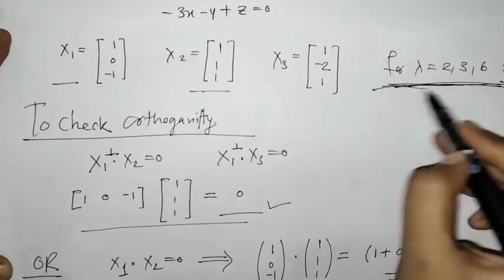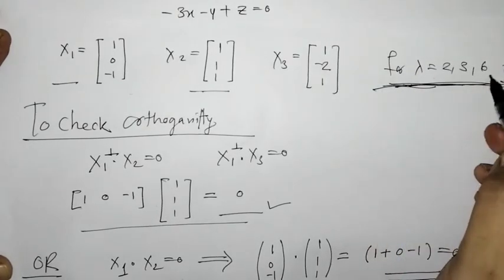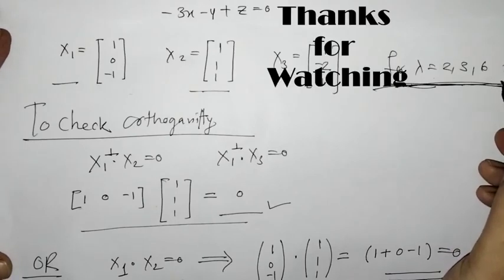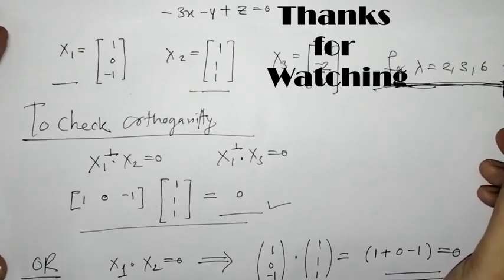So in this way we proceed for finding eigenvectors when the matrix is symmetric and the eigenvalues are non-repeated. That's it for now — see you in the next video. Thank you, keep watching.